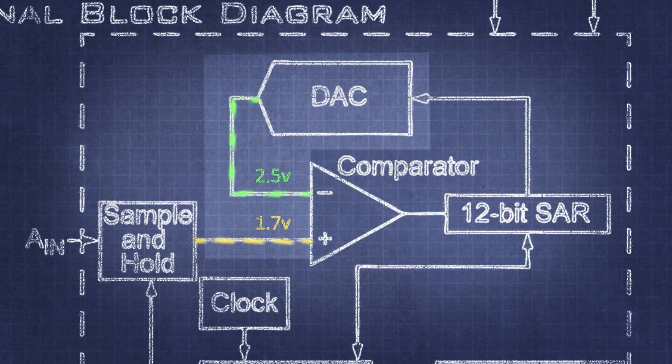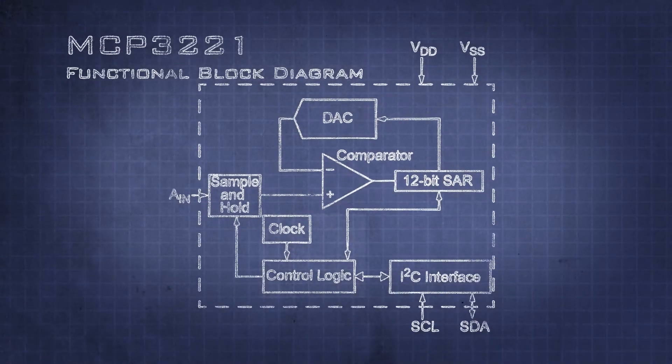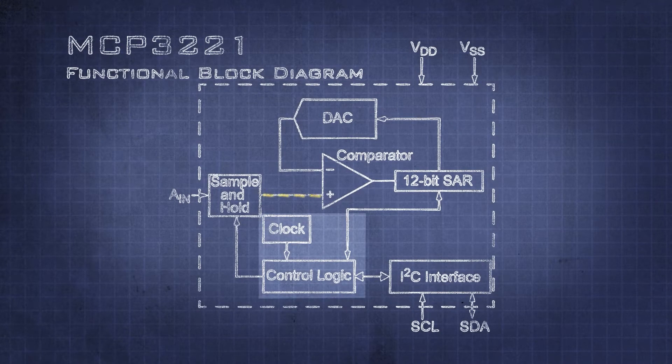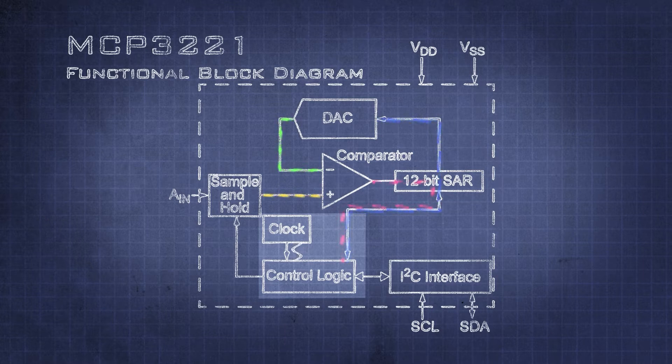The next major component that is needed is a comparator. This will let us test if our input voltage is higher or lower than our generated reference voltage. A clock signal and some control logic allow us to set the DAC up and step through it until we quantize the input.